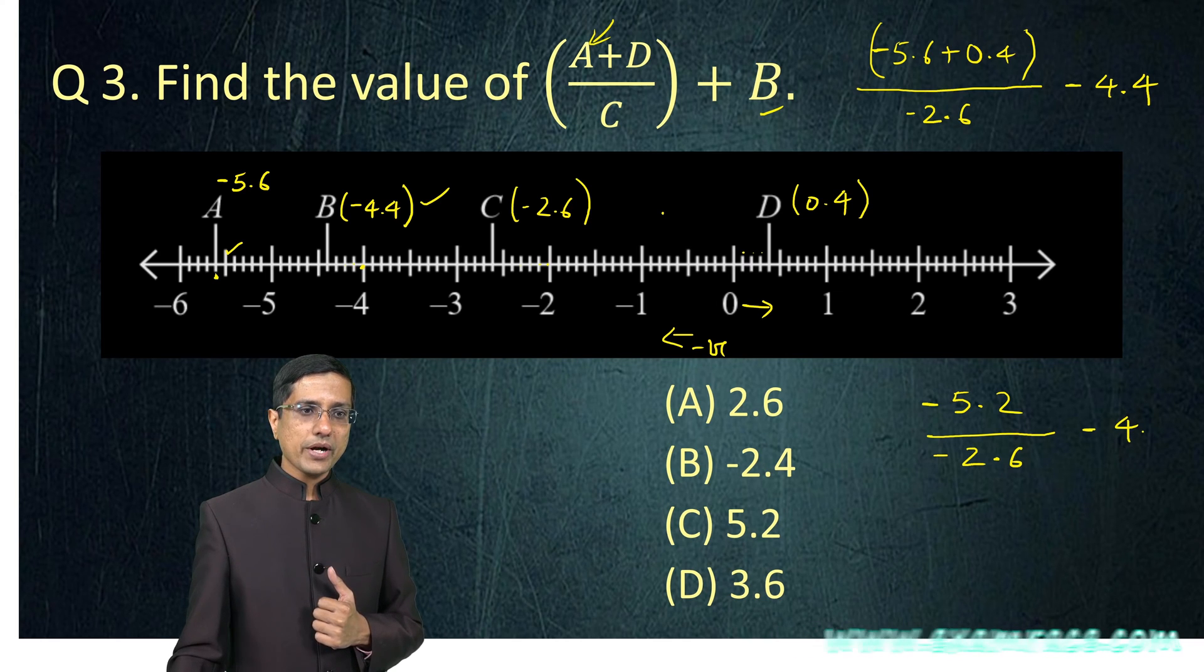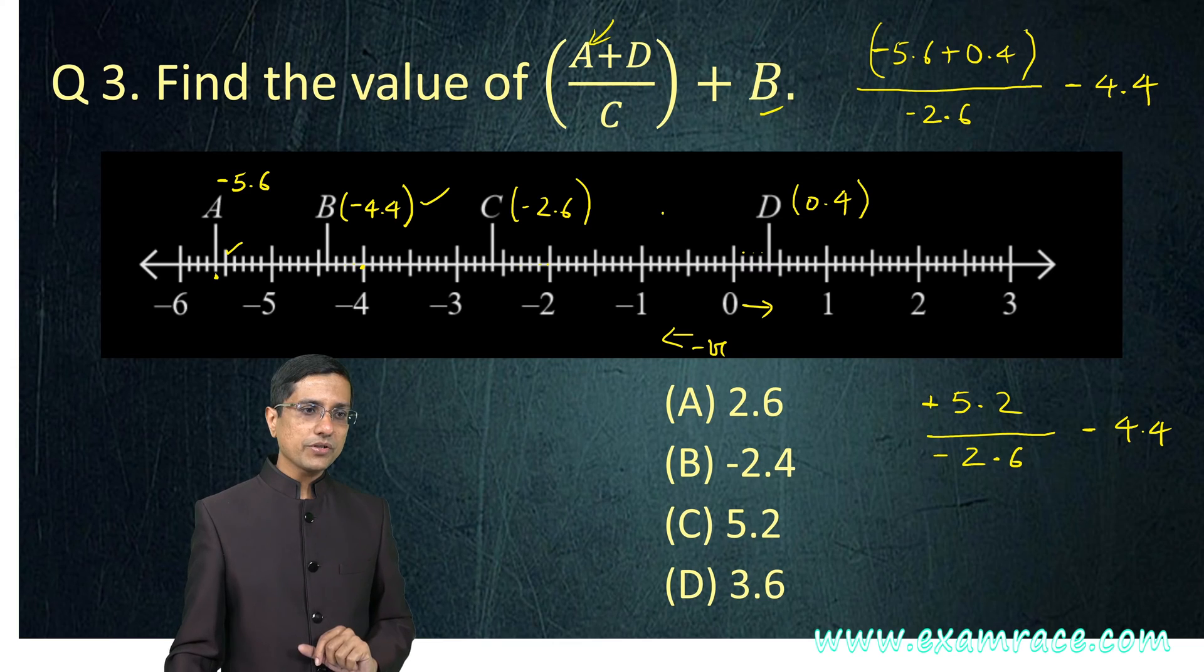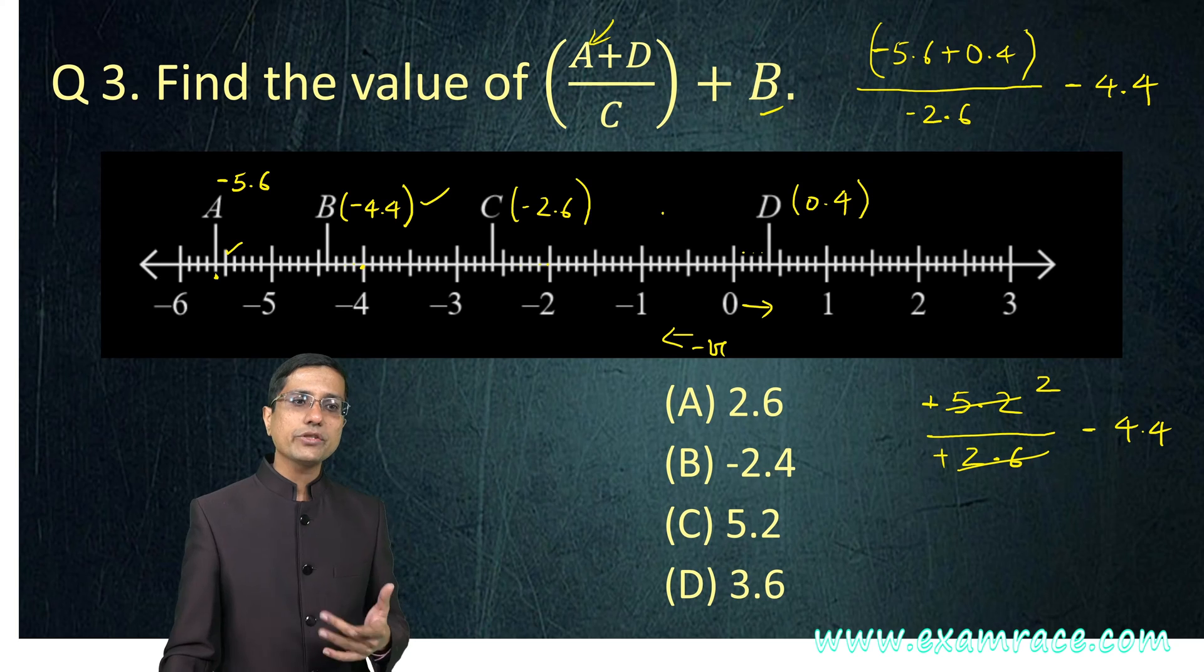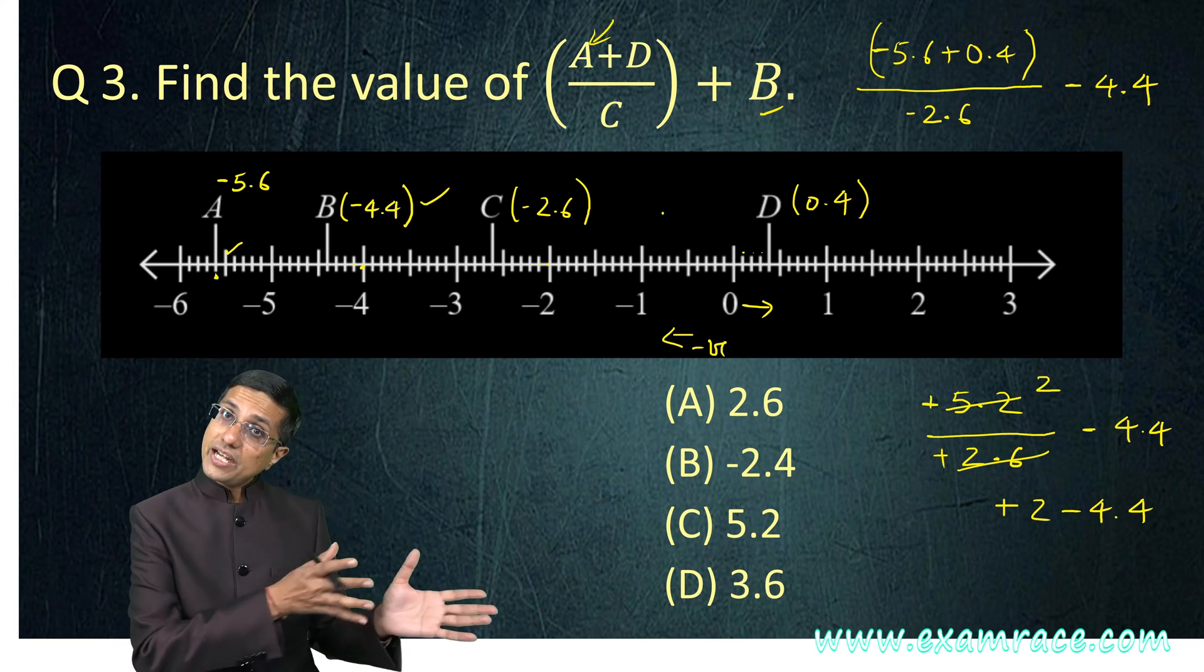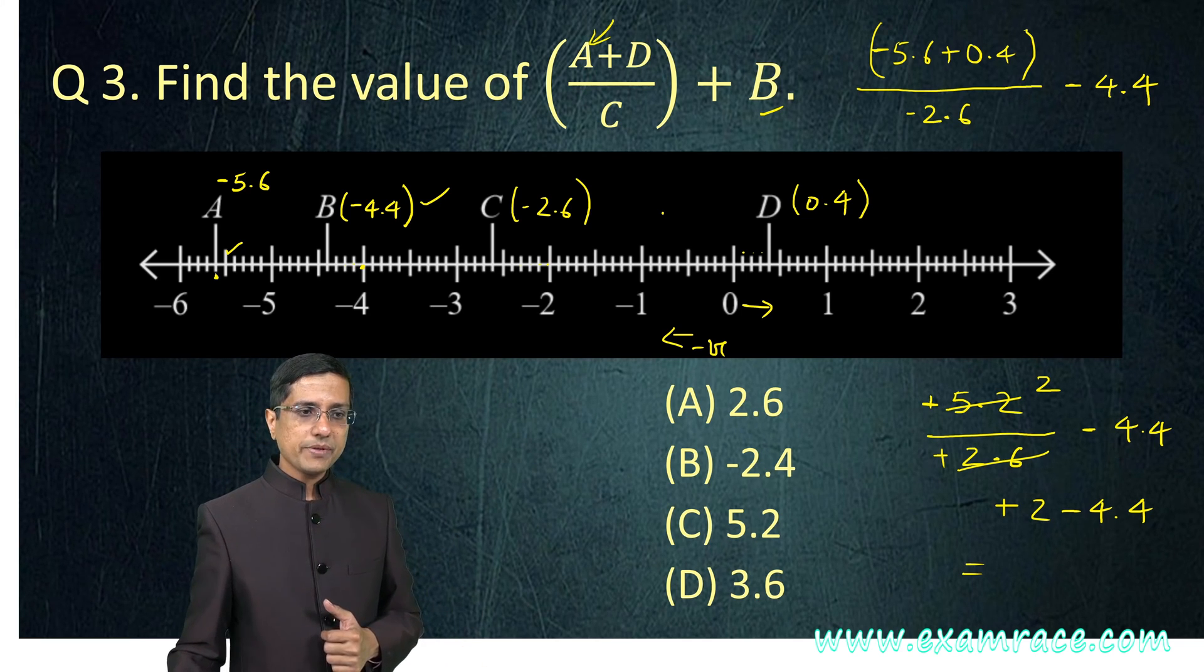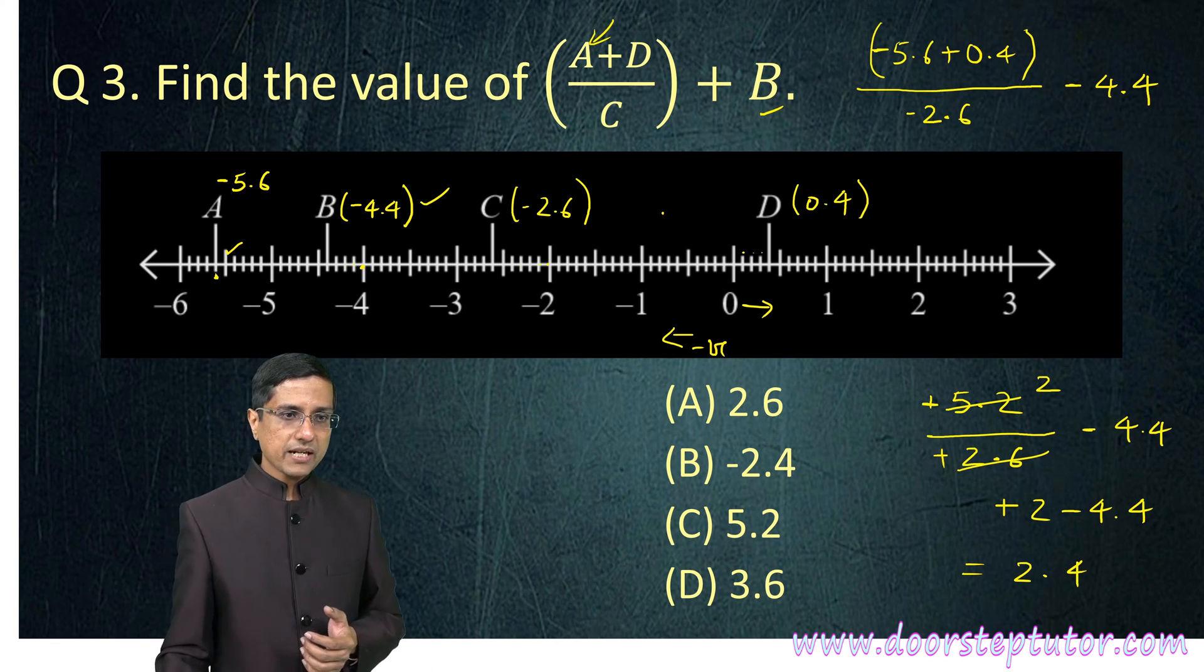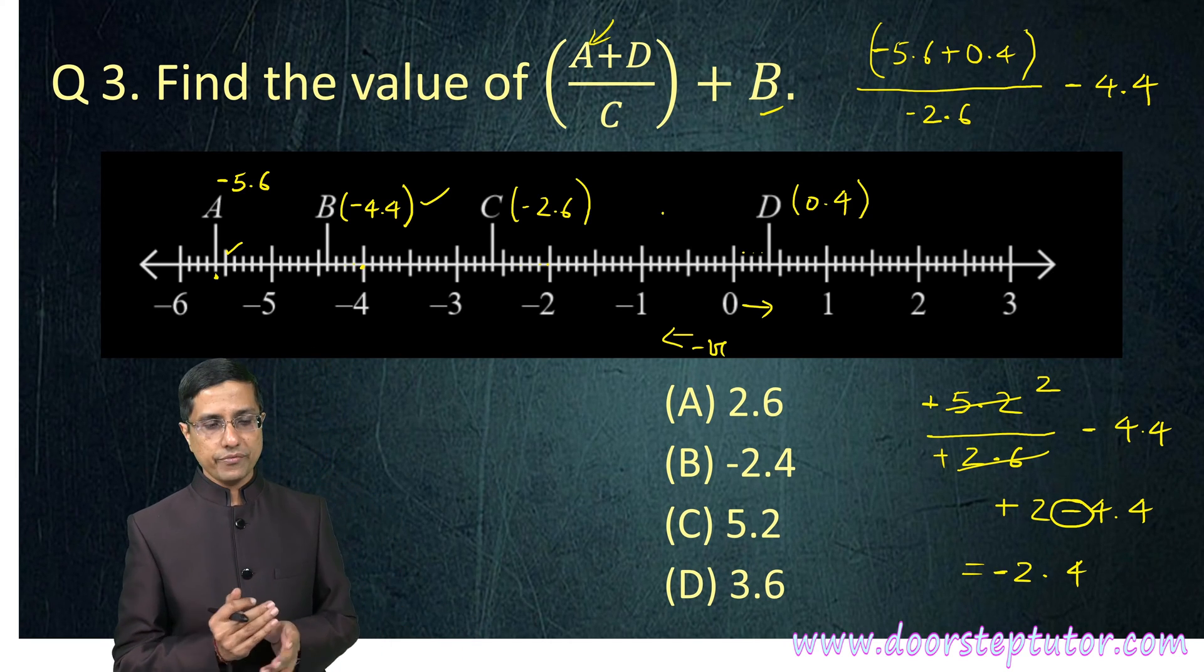This is minus 5.6 and we are adding plus 0.4 to it. This will become minus 5.2 divided by minus 2.6. And of course, this is minus 4.4. Negative divided by negative becomes positive. 2.6 and 5.2 they cancel in twos, so this becomes plus 2 minus 4.4. This 4.4 is very negative. When I add 2 to it, it will become 2.4. And that is of course our answer. The sign would remain negative because this was very negative to start with. So, minus 2.4 would be our answer. Very simple question.